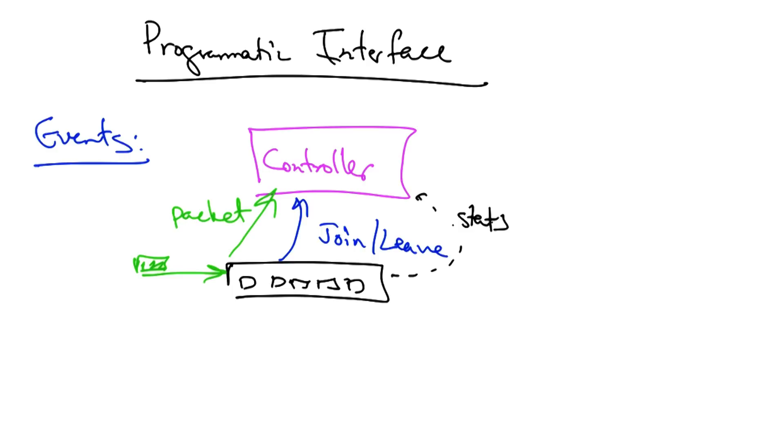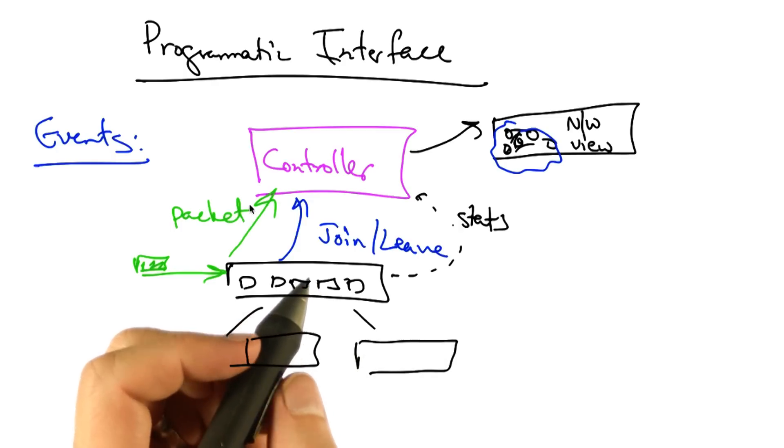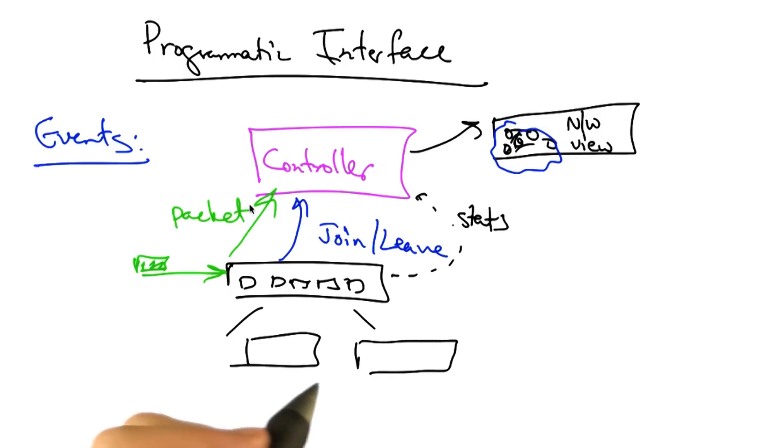The controller also keeps track of a network view, which includes a view of the underlying network topology. It also speaks a control protocol to the switches in the network. That control protocol effectively allows the controller to update the state in the network switches.